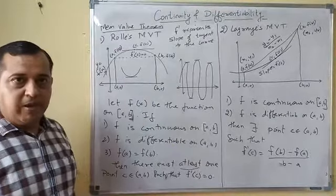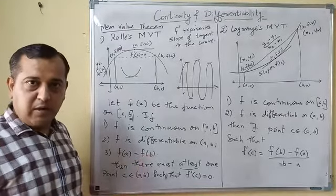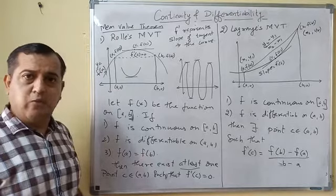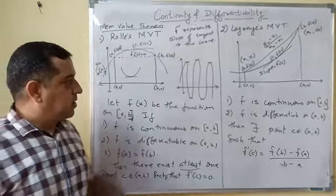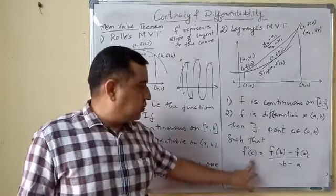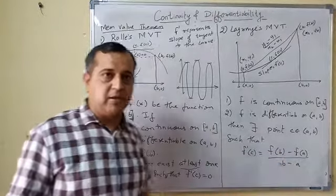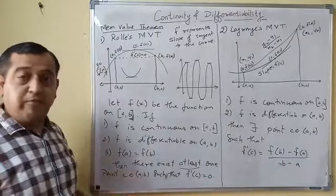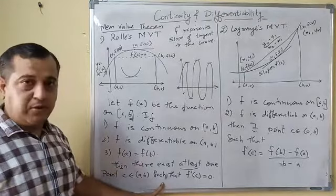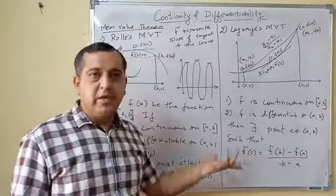The two conditions are the same: f should be continuous on closed interval [a,b], f should be differentiable on open interval (a,b). There is no third condition. The conclusion is f'(c) equals (f(b) - f(a))/(b - a). In the case where f(a) and f(b) are equal, then f'(c) equals 0.